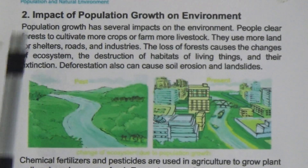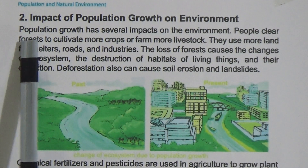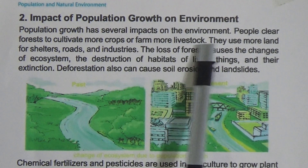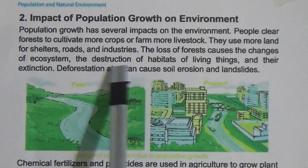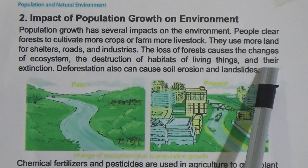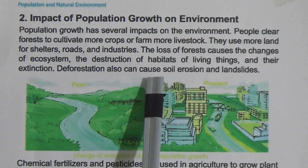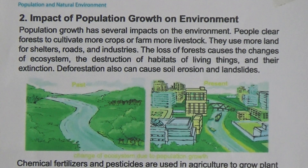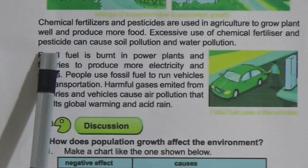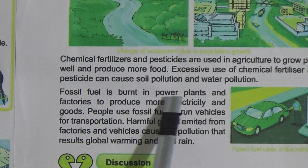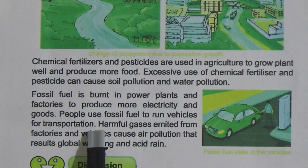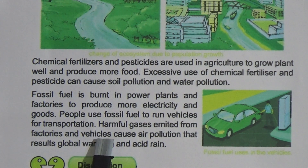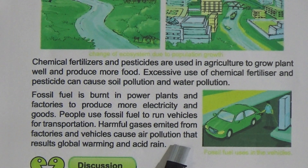Now we come to the impact of population growth on the environment. Population growth has several impacts. People clear forests to cultivate more crops, raise more livestock, and use more land for shelters, roads, and industries. The loss of forest causes changes to ecosystems, destruction of habitats, and the extinction of living things. Deforestation can cause soil erosion and landslides. Chemical fertilizers and pesticides used in agriculture can cause soil and water pollution. Fossil fuels burnt in power plants and factories produce electricity, and vehicles burn fossil fuel for transportation. Harmful gases emitted from factories and vehicles cause air pollution, resulting in global warming and acid rain.